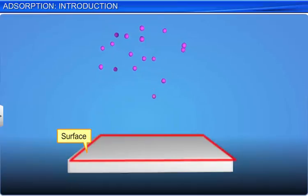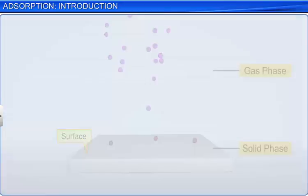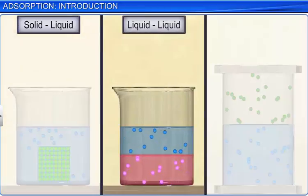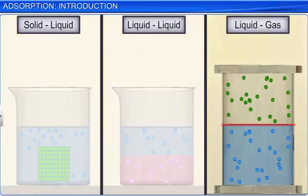An interface is a surface that forms a common boundary between two different phases, such as an insoluble solid and a liquid, two immiscible liquids, or a liquid and an insoluble gas.